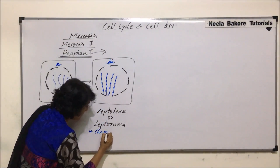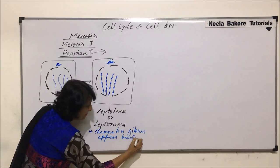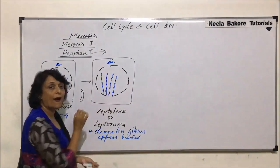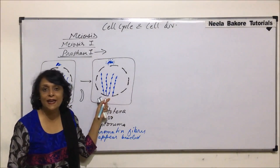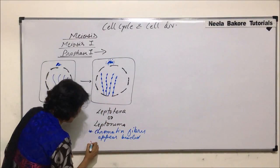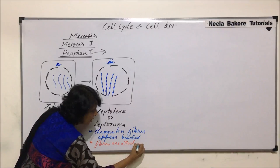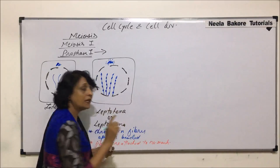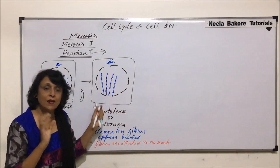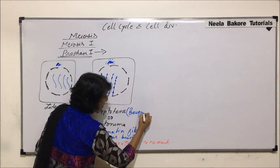To summarize the key features of leptotene: first, chromatin fibers appear beaded because of thickening at regular intervals. Second, since all fibers are attached from one end to the nuclear membrane, they give the appearance of a bouquet. That is why this stage is also known as the bouquet stage.